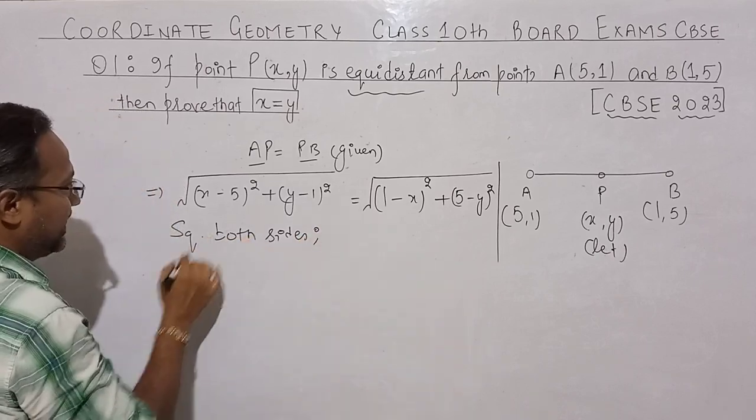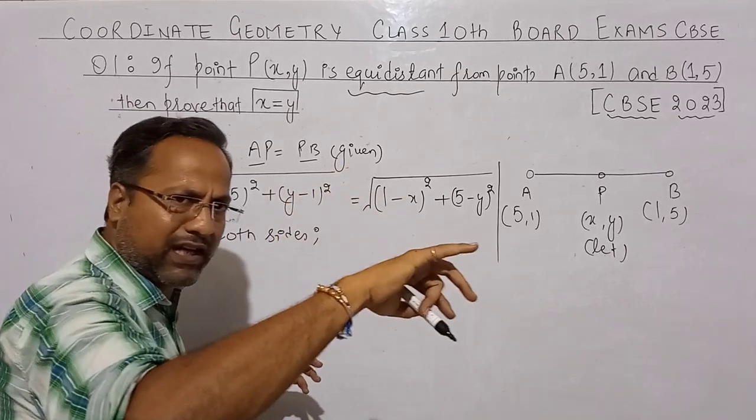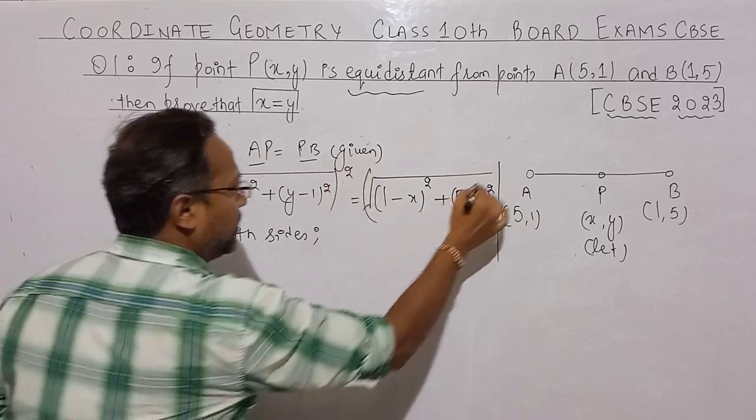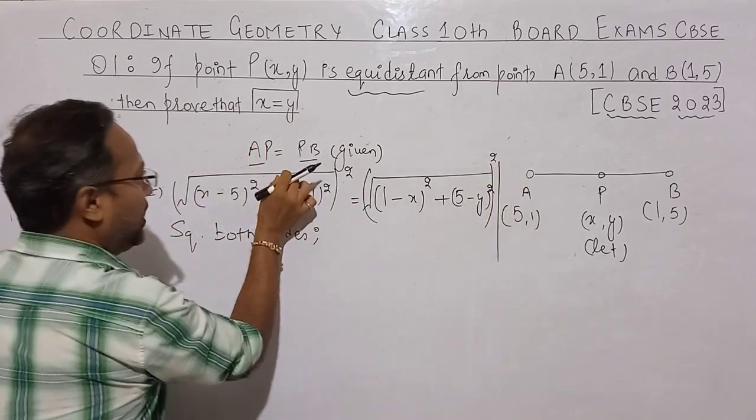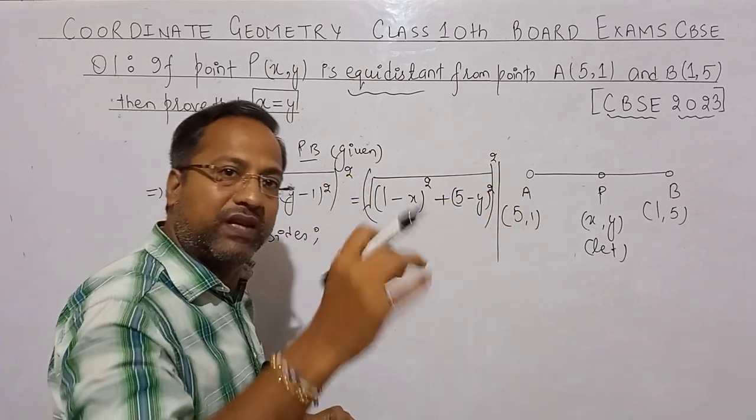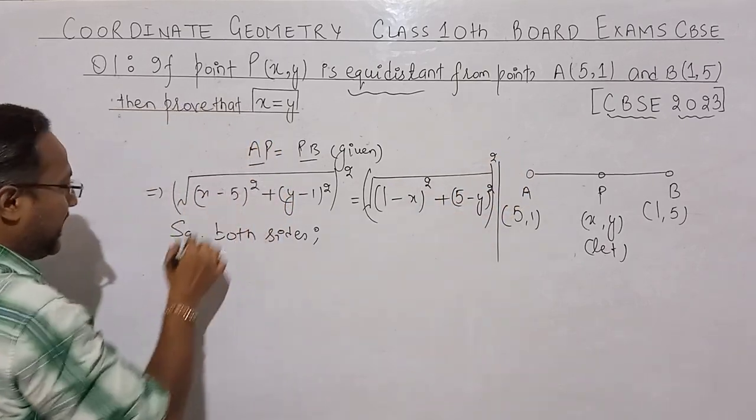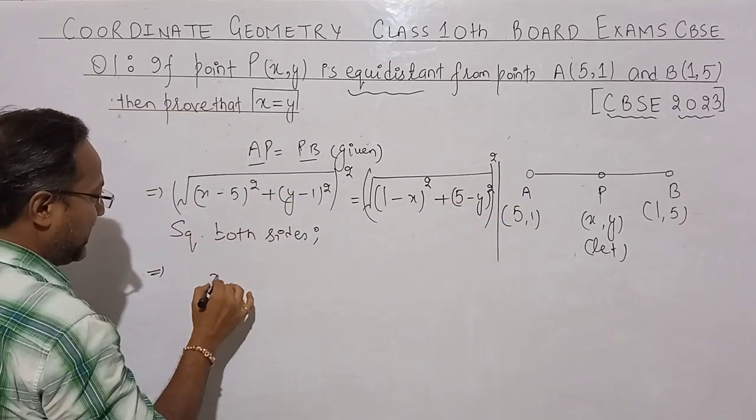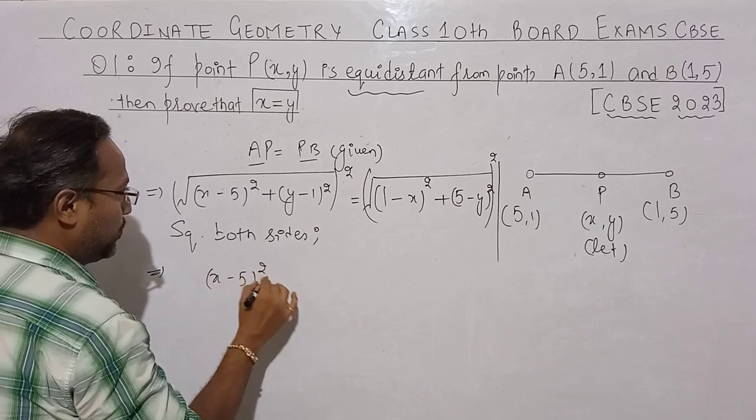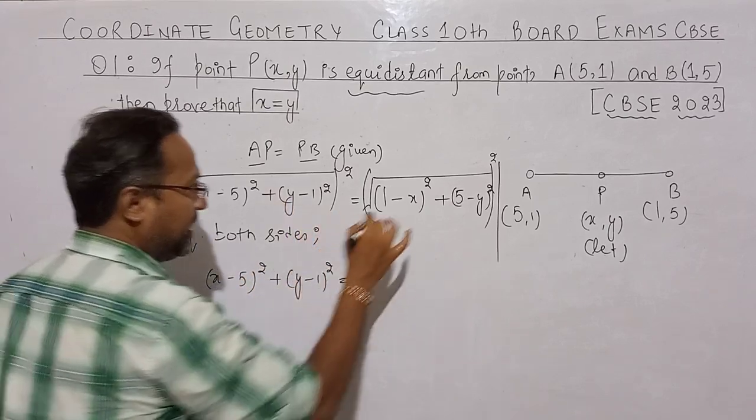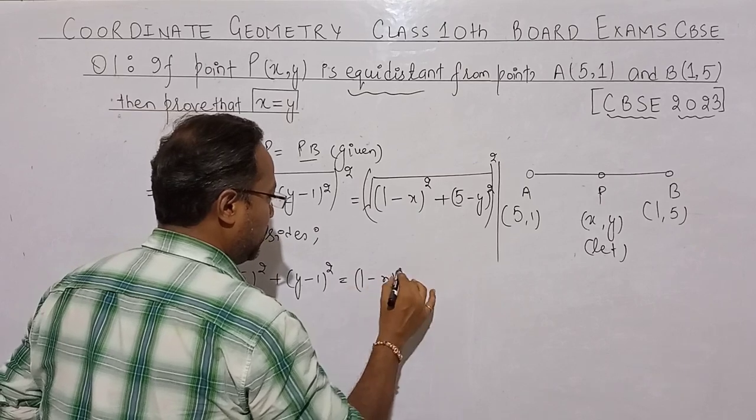So what will happen? This root square cancel, this square root cancel. This will be (x minus 5)² plus (y minus 1)² equals (1 minus x)² plus (5 minus y)².